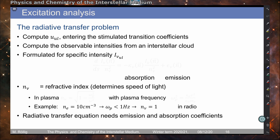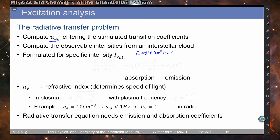We have to compute the specific intensity — the energy density of the radiation — because this enters the strength of all the stimulated transition coefficients. We can then compute the observable intensities from an interstellar cloud, formulated as specific intensities in units of energy per second, per area, per frequency interval (per Hertz), and per direction, given in radians.